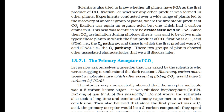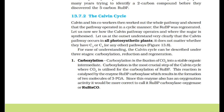The primary acceptor of CO2: how many carbon atoms would a molecule have which, after accepting CO2, would give 3 carbons of PGA? The studies showed unexpectedly that the acceptor molecule was a 5-carbon ketose sugar — ribulose bisphosphate (RuBP). Scientists had believed the primary acceptor would be a 2-carbon compound and spent many years trying to identify it before discovering the 5-carbon RuBP.